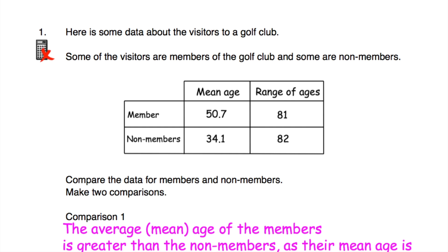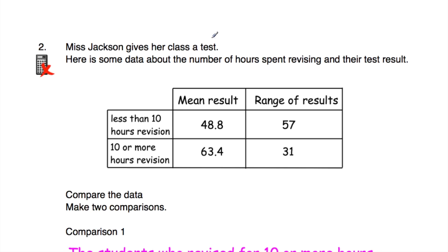Question number two: Miss Jackson gave her class a test and recorded data about revision hours and test results. She split the class into those who spent less than 10 hours revising and those who spent 10 or more hours revising. The mean result for students who revised less than 10 hours is 48.8, compared to 63.4 for those who revised for 10 or more hours — the students who revised longer got higher results. The range of results for those who revised less than 10 hours is higher than for those who revised 10 or more hours, meaning their results are more spread out.